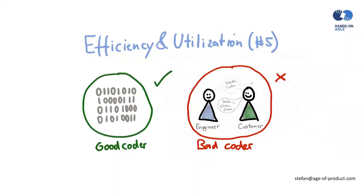Number five: efficiency and utilization fetish. This always happens when there is no trust in teams and middle management believes they need to be told what to do and how to do it. For example, engineers are supposed to deliver code — they're not supposed to talk to customers or take over customer support duties to get first-hand experience of customer problems. The typical explanation is that customer care people cost $15 an hour rather than $75 for an engineer, so engineers are considered too expensive for those minor tasks.